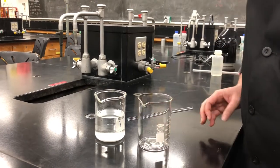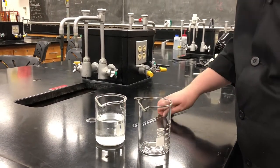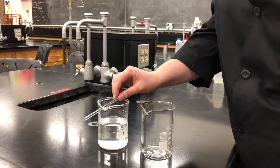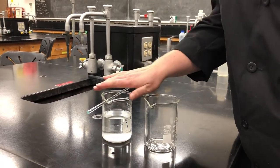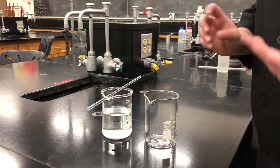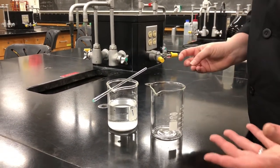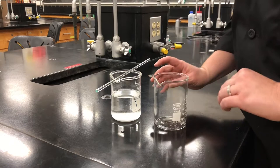I have a second beaker here that I'm going to pour that liquid into. To do this, I'm going to place a stir rod on top of my beaker so that it's sitting right in that little divot. That's going to help me control my pouring, prevent splashing, and also hold some of that solid back.